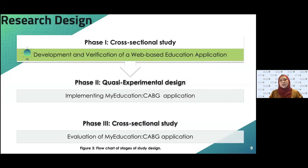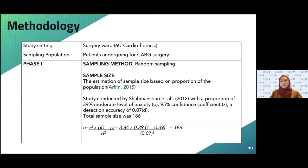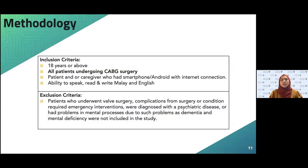This study consists of three phases using a tool design, cross-sectional study, and quasi-experimental study. For Phase 1, a cross-sectional study, I started to develop and verify a web-based education application. Data collection was within one year, from August 2014 to August 2015. I selected patients undergoing CABG surgery admitted to Ward 6U using simple random sampling, with a total sample size of 186. Inclusion criteria focused on patients undergoing CABG who have a smartphone or Android device with internet connection. Patients undergoing valve surgery, those with emergency conditions, or with a psychiatric diagnosis were excluded.